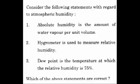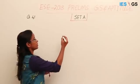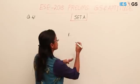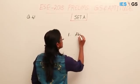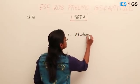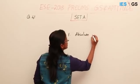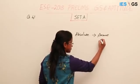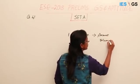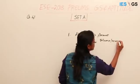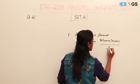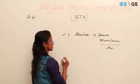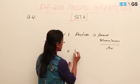We have to select the correct statements. First, absolute humidity measures the amount of water vapor per unit volume. Absolute measures the total amount — it is not relative. So the amount in terms of mass per unit volume of air gives the absolute measurement. The first statement is correct.